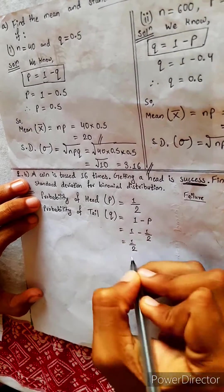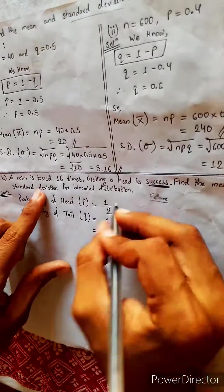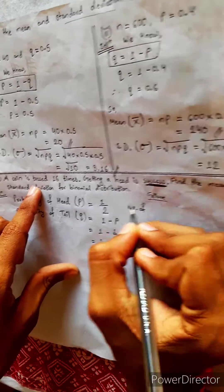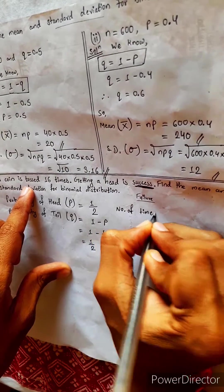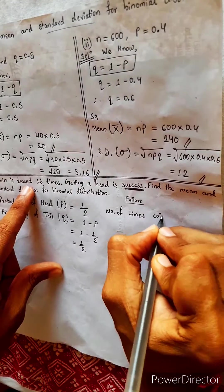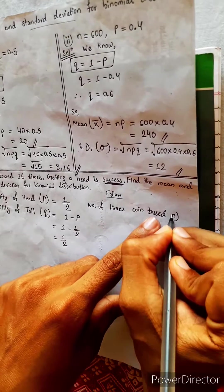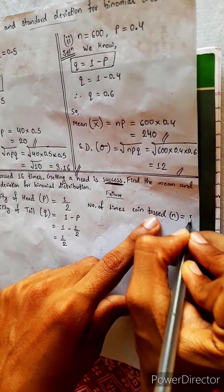Number of times our experiment is conducted, number of times a coin is tossed, this is represented by n. N equals 16. We have everything now.